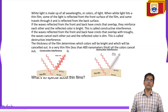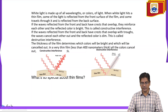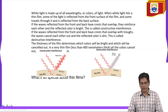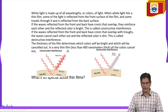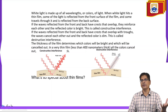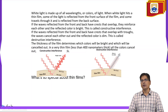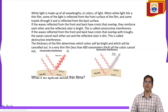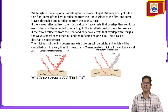White light is made up of all wavelengths of color. When white light hits a thin film, some light is reflected from the front surface and some travels through and reflects from the back surface. If the reflected waves overlap and reinforce, the color is bright — constructive interference. If they cancel, the color is dim — destructive interference. The thickness of the film determines which colors are bright or cancelled.